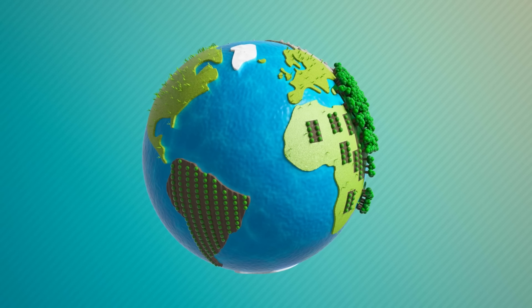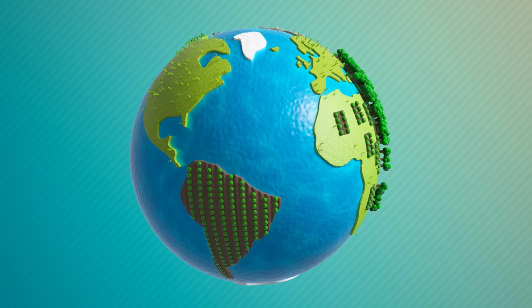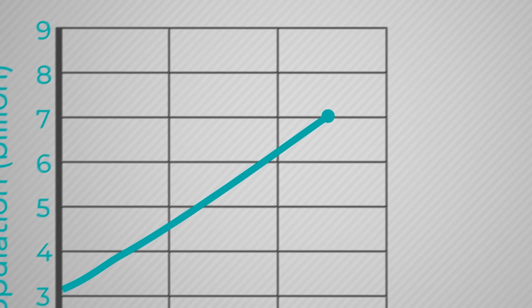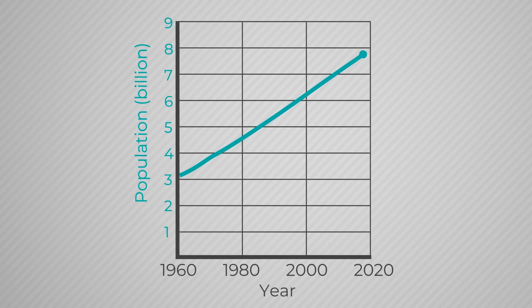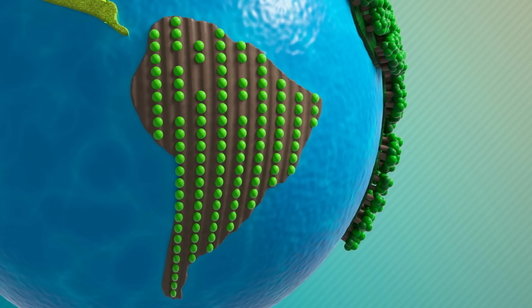All of this paints a pretty grim picture, but fortunately, there are solutions. First, we can improve yields. Historically, we were able to grow from 3 billion people in 1960 to almost 8 billion in 2020, with now more food available per person than in the 1960s, all while keeping the amount of cropland used relatively steady. That means we were able to produce more food on the same area of land.